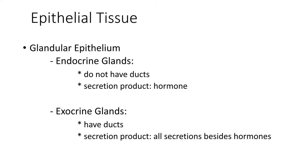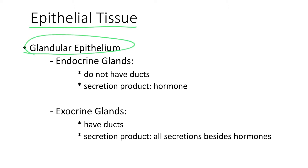When I started studying the epithelial tissue, I told you that we can subdivide the epithelial tissue into two main categories: the surface epithelium, which lines and covers surfaces, and the glandular epithelium, which is the epithelium that makes the secreting portion of a gland.